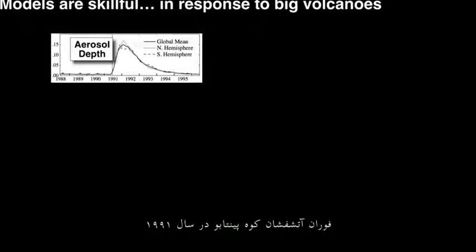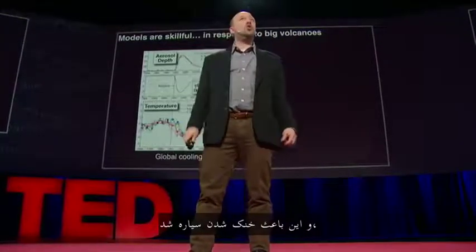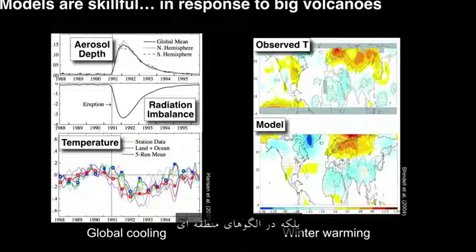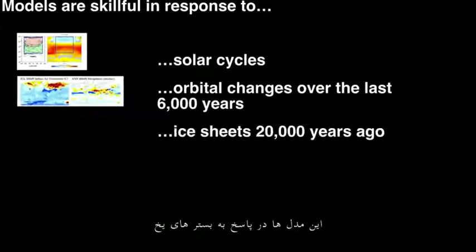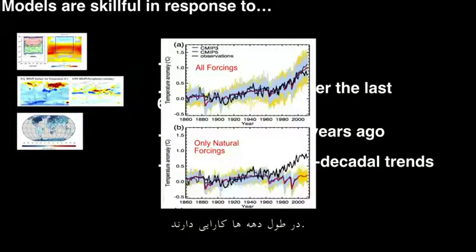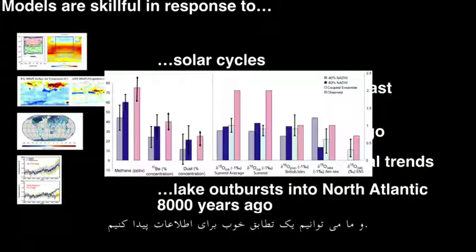We can look at other examples. The eruption of Mount Pinatubo in 1991 put an enormous amount of aerosol — small particles — into the stratosphere. That changed the radiation balance of the whole planet. There was less energy coming in than there was before, so that cooled the planet. Those red lines and green lines are the differences between what we expected and what actually happened. The models are skillful, not just in the global mean, but also in the regional patterns. The skill associated with solar cycles changing the ozone in the stratosphere, skill associated with orbital changes over 6,000 years — the models are skillful in response to the ice sheets 20,000 years ago, skillful when it comes to 20th century trends, and successful at modeling lake outbursts into the North Atlantic 8,000 years ago.